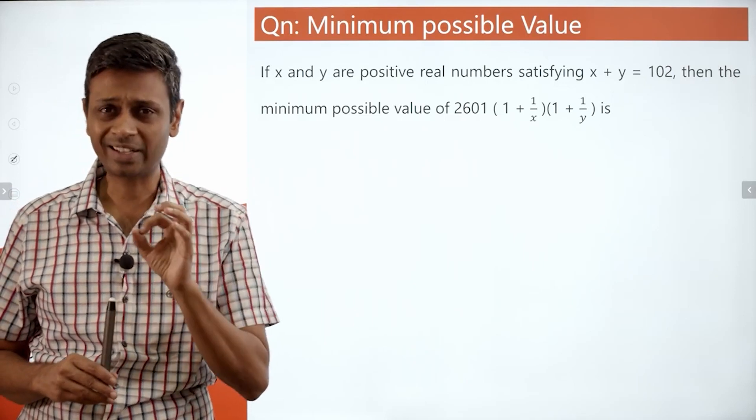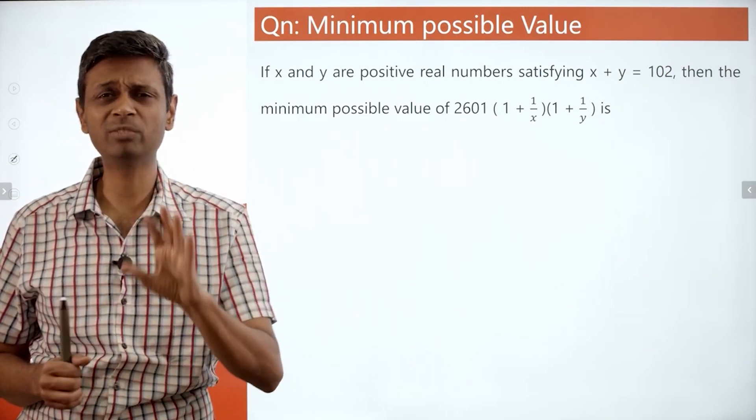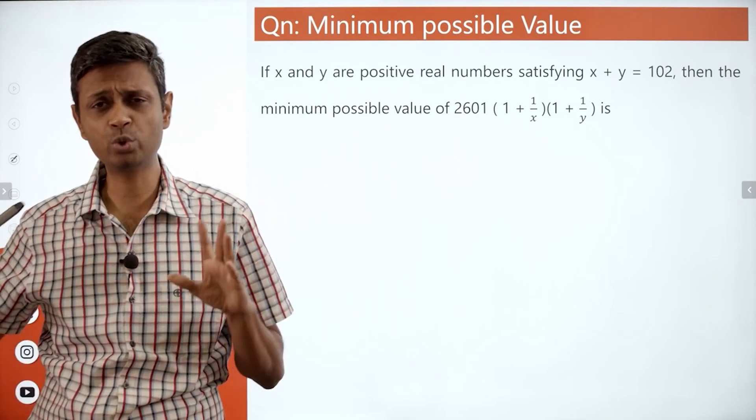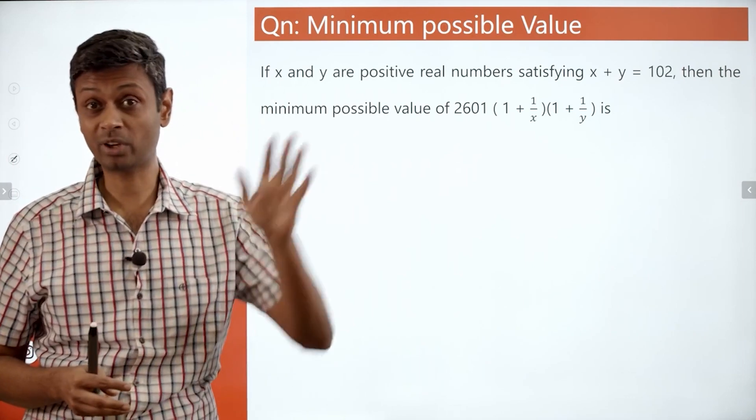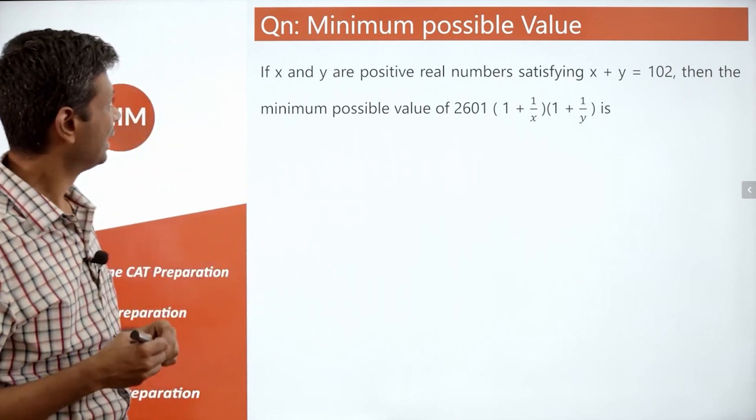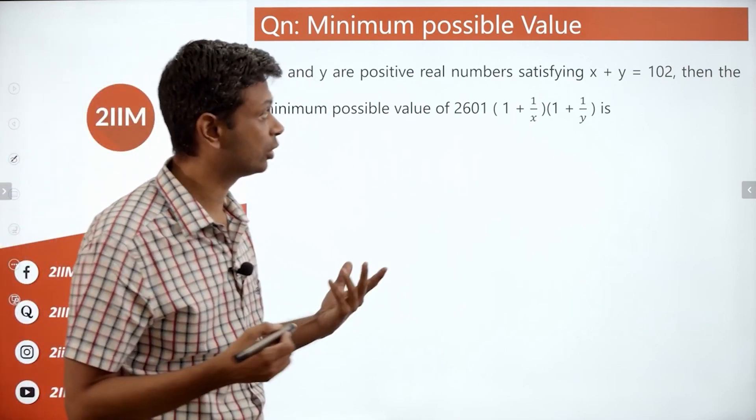This is a wonderful question, really tough, but there's a very simple juicy way of doing this. I'm going to do it with the juiciest method possible and give you a starting step for the more rigorous method, but not going to get into that. When x and y are positive real numbers satisfying x plus y is 102...